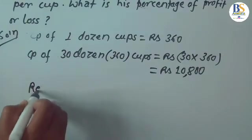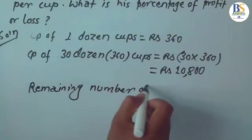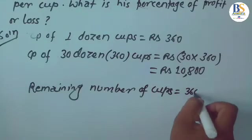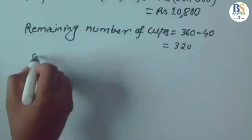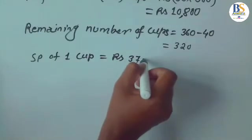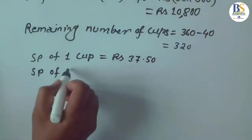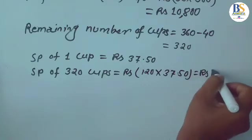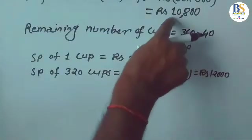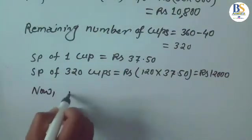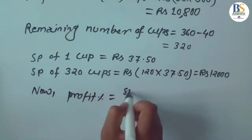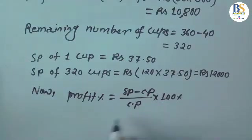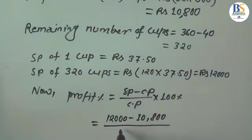40 of them were broken, so remaining cups = 360 − 40 = 320 cups. SP of 1 cup = RS 37.50, so SP of 320 cups = 320 × 37.50 = RS 12,000. Clearly SP is bigger than CP, so we calculate profit percentage: profit% = (SP − CP)/CP × 100% = (12,000 − 10,800)/10,800 × 100% = 1,200/10,800 × 100% ≈ 11.11%.